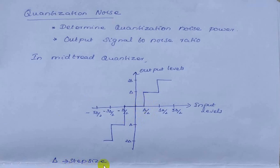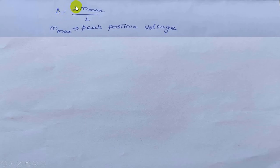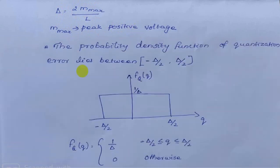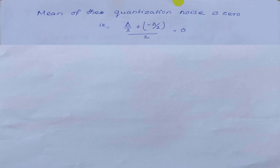Delta is the step size, equal to 2 times m_max divided by L, where m_max is the peak positive voltage. The probability density function of the quantization error lies between minus delta/2 and delta/2. The PDF f_q(q) equals 1/delta if q lies between minus delta/2 and delta/2, and 0 otherwise. The mean of the quantization noise is (delta/2 + (−delta/2)) / 2, which equals 0.